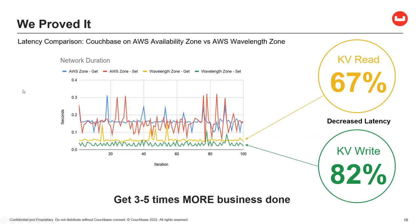Couchbase proved this working with partner AWS, testing edge nodes with Couchbase Sync Gateway and measuring read/write speeds. The chart shows red and blue as read and write speeds for a standard AWS zone, and yellow and green for AWS Wavelength zones — which are in 5G networks, closer to the user. The tests showed around an 80% reduction in read and write latency, meaning more business can be done — more information processed and more results achieved regardless of what the application is trying to accomplish.